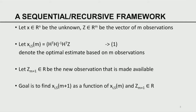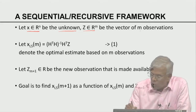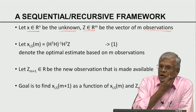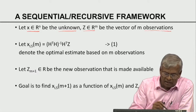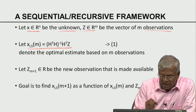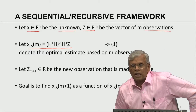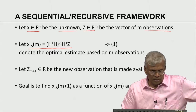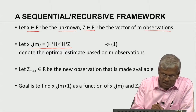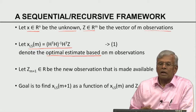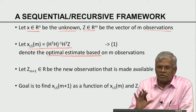Let X be a vector in R^n, and Z be a vector in R^m. X is the unknown; Z is the known observations. From previous lectures, we have already seen that X_LS(M) is given by (H^T H)^{-1} H^T Z, assuming an overdetermined case. This denotes the optimal estimate based on M observations, coming from the basic theory of linear least square deterministic inverse problems.